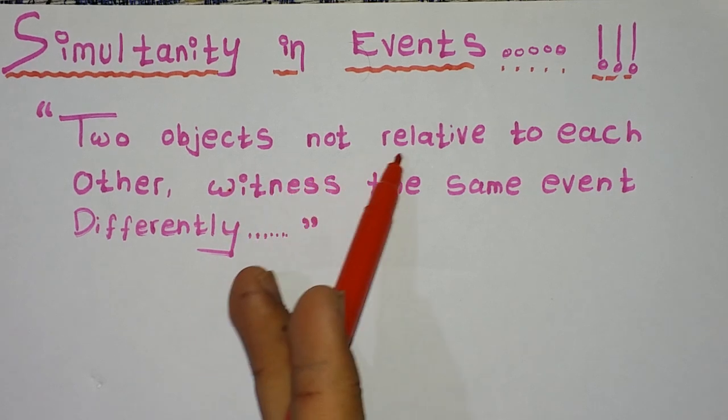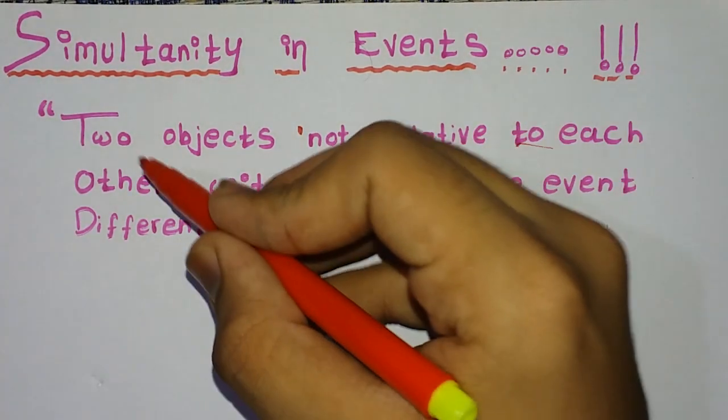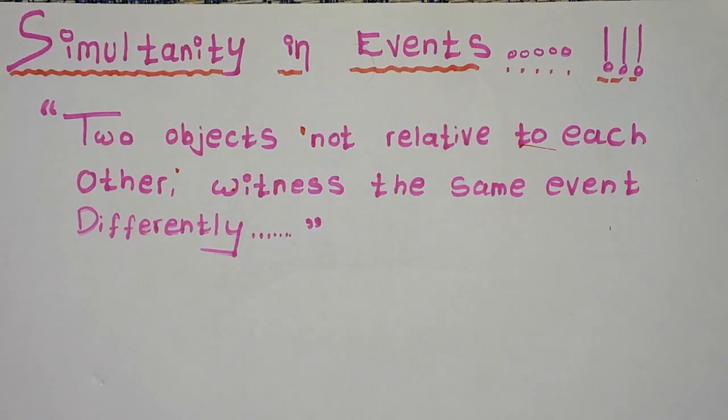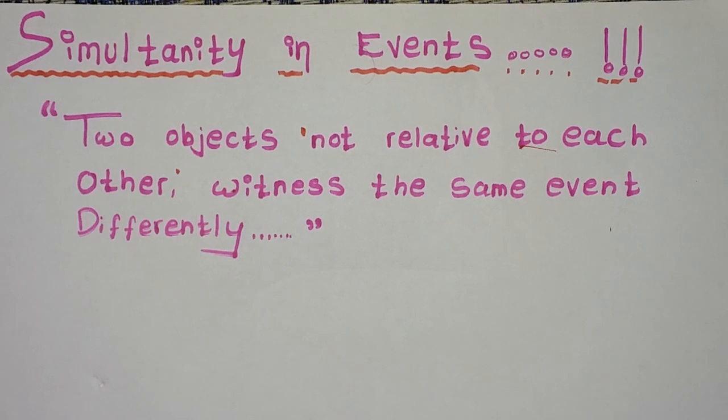...not relative to each other witness the same event differently. Simultaneity in events simply says that if there are two objects which are not relative to each other - this is the most important line - they witness the same event occurring differently. This is the counter view of the first postulate which says that the laws of physics are equal for all observers in the same inertial frame of reference.